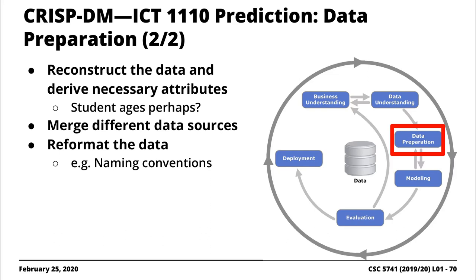Of course, the data has to be labeled to a certain extent. If we're implementing and using this model this year, we would use last year's data to prepare our training set — we label them because we know who passed and who failed. Then using this year's observations, after quiz two for example, we feed the learning algorithm the input from students, and it can tell us which particular student is at risk.